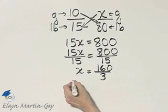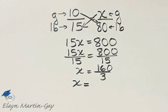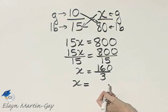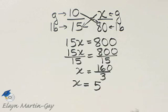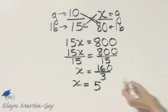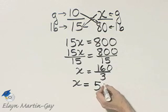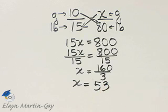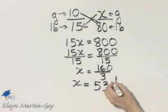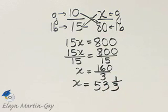Let's go ahead now, though, and write this answer as a mixed number. I'm going to divide 3 into 160. 3 divides into 15 five times, a remainder of 1. And then 3 divides into 10 three times. And that's 9. I have a remainder of 1. So that's 53 and 1 third.